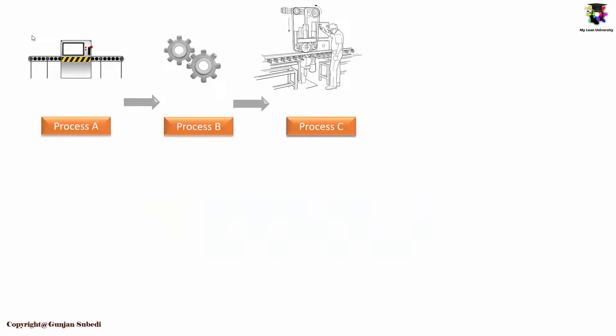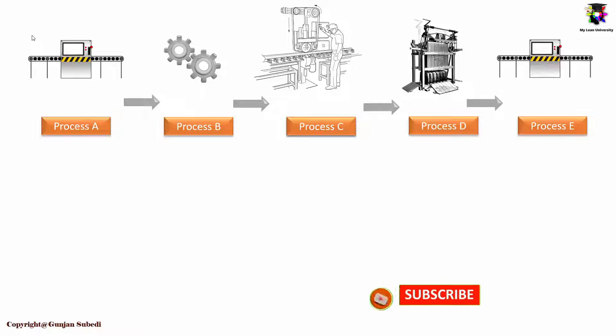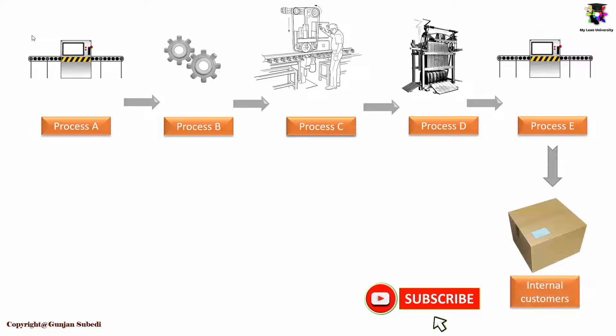Suppose you had to go through certain 5 processes to produce any product or to sell any service. Suppose these are process A, process B, C, process D, and process E. At the end of the chain you will get your product or service, and this will be handed to the customers.